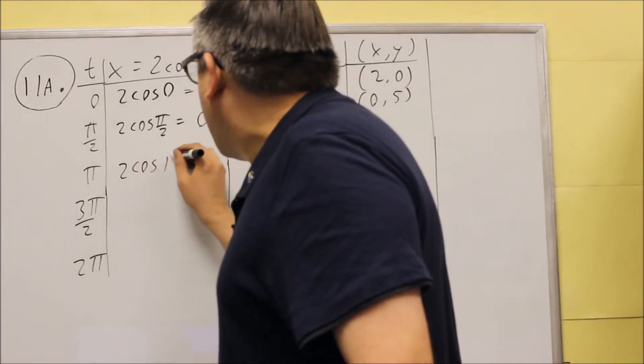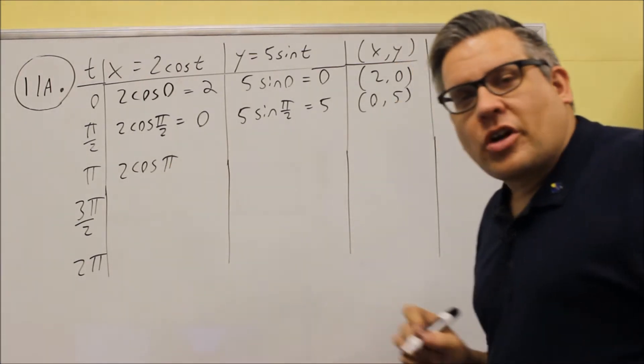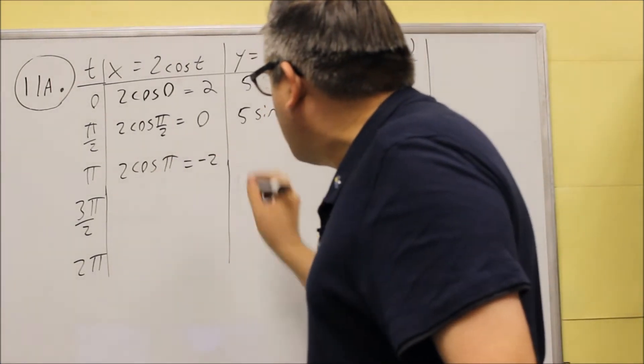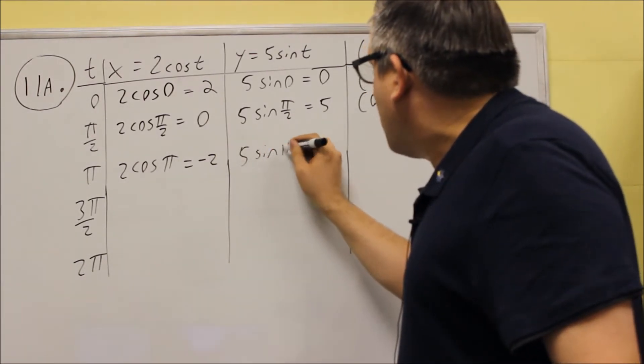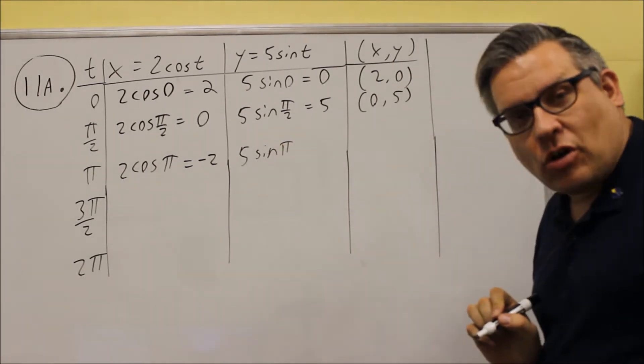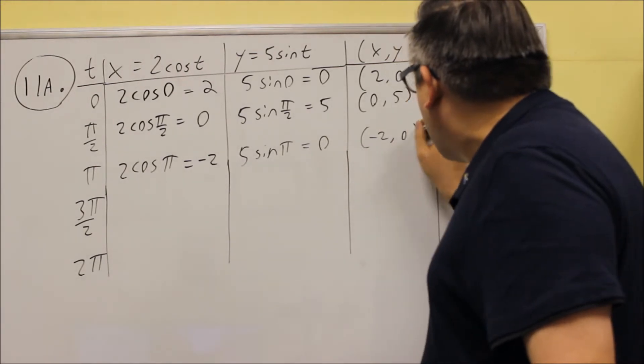And we just keep filling the table out, and we do two cosine pi from the unit circle. Cosine of pi is negative one, times two is negative two. Then we have five times sine of pi. Sine of pi, that value here, sine of pi is zero. Zero times five is zero, so we get negative two comma zero.